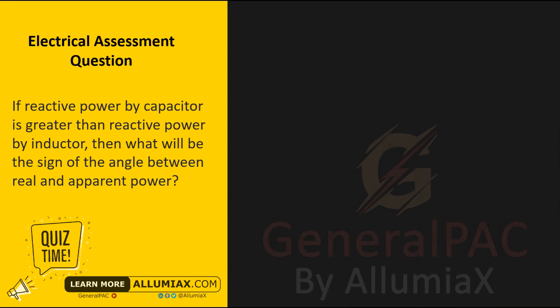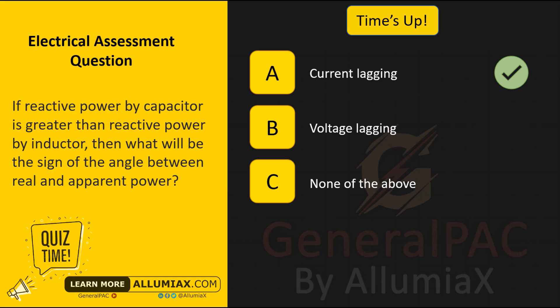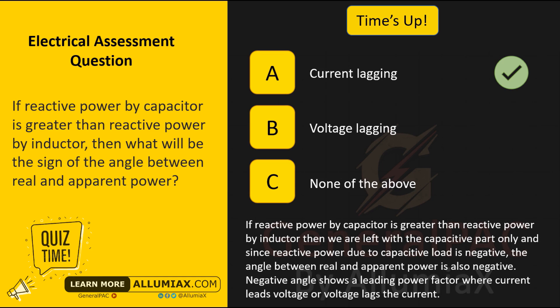If reactive power by the capacitor is greater than reactive power by the inductor, then what will be the sign of the angle between real and apparent power? A: Current lagging, B: Voltage lagging, C: None of the above. Time's up. The answer is A: Current lagging. If reactive power by the capacitor is greater than reactive power by the inductor, then we are left with the capacitive part only. Since reactive power due to a capacitive load is negative, the angle between real and apparent power is also negative. A negative angle shows a leading power factor, where current leads voltage, or voltage lags the current.